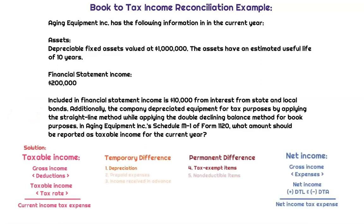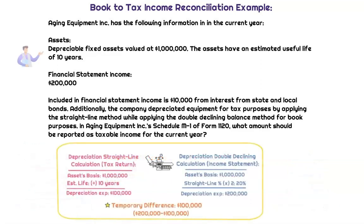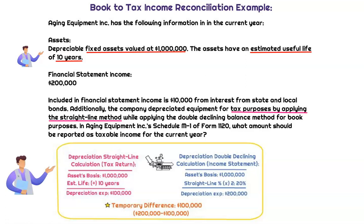Taxable income is going to be the amount after adjustments have been made from temporary and permanent differences. Temporary differences are going to be timing differences that will reverse, whereas permanent differences will never reverse. Looking at depreciation — the asset applies straight line when calculating taxable income. The asset is valued at $1 million with an estimated useful life of 10 years, so the straight-line depreciation expense would be $1 million divided by 10 — that's a $100,000 depreciation expense.